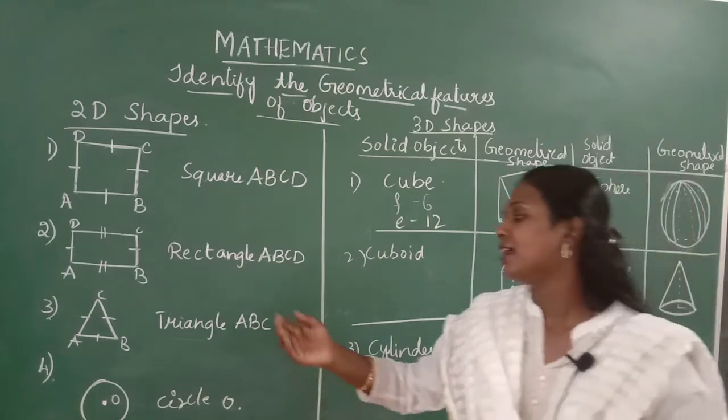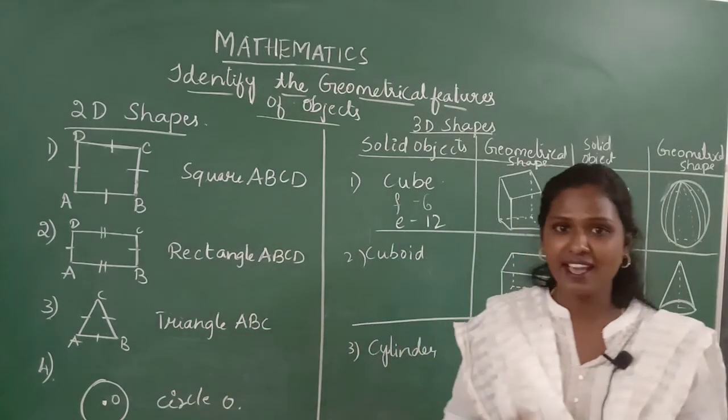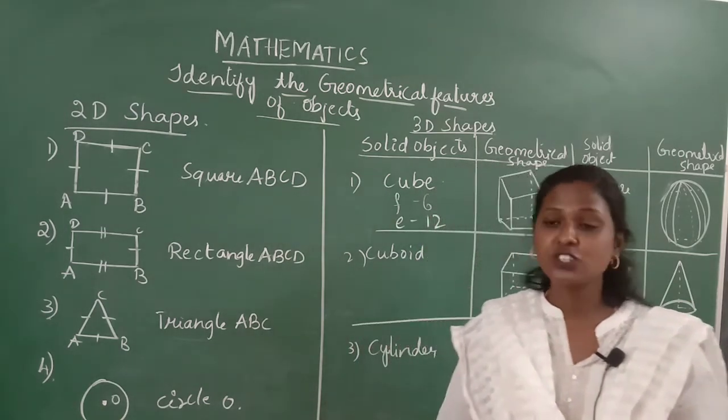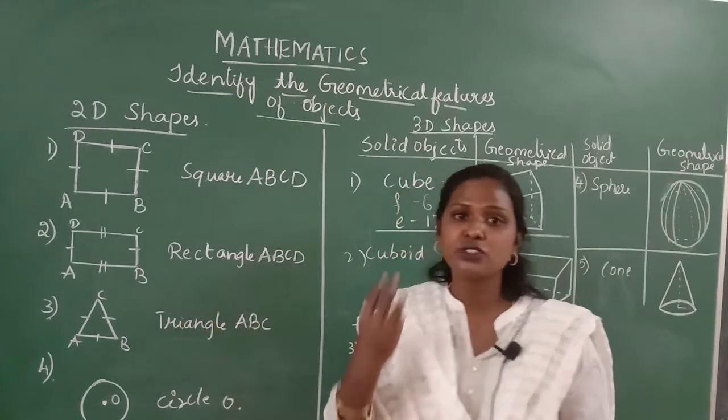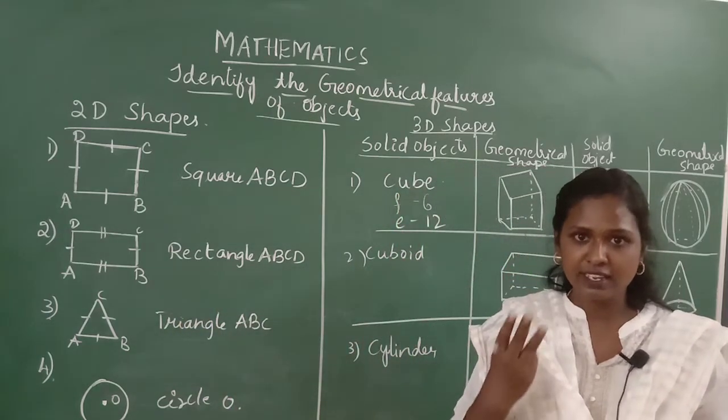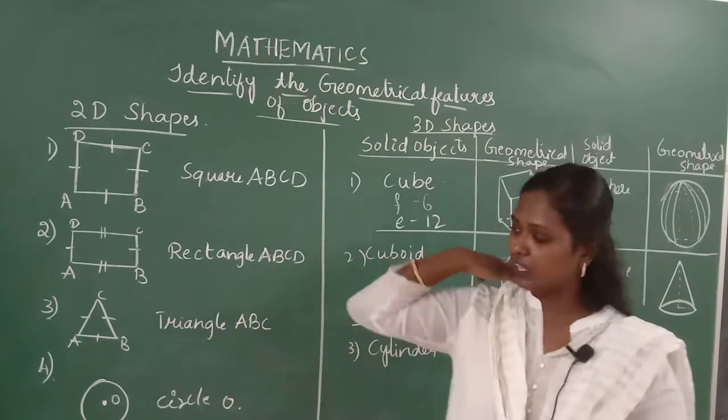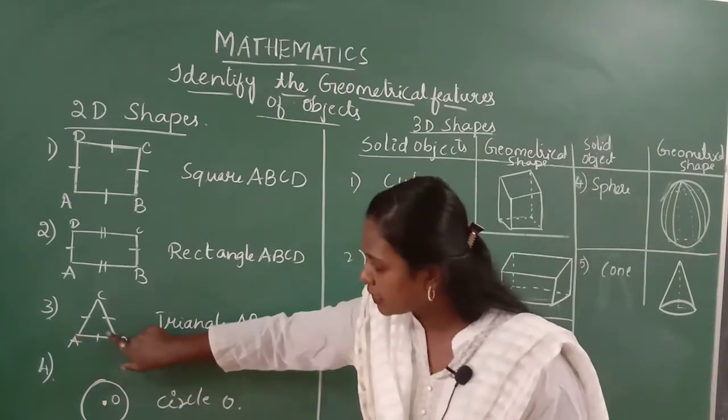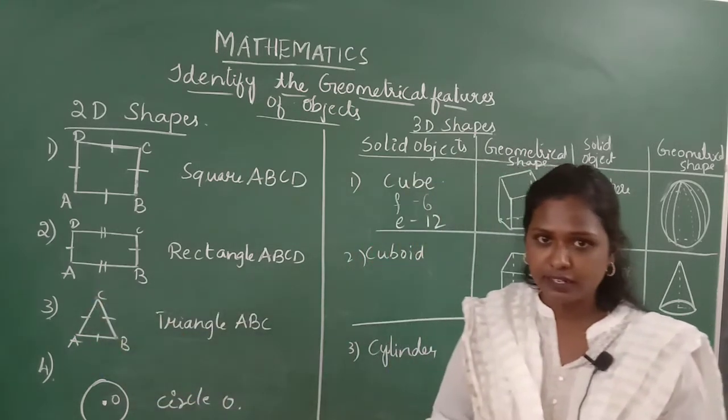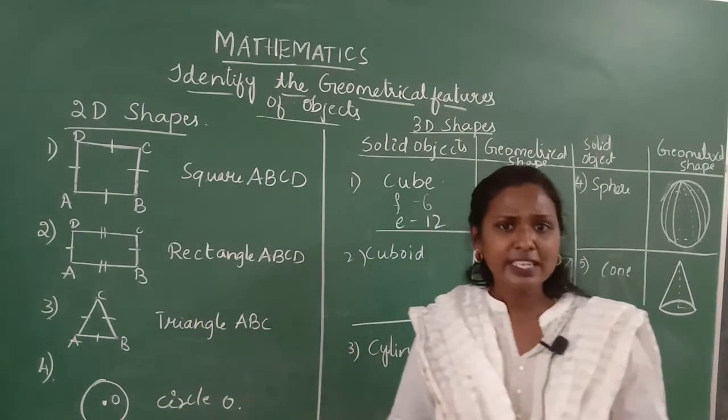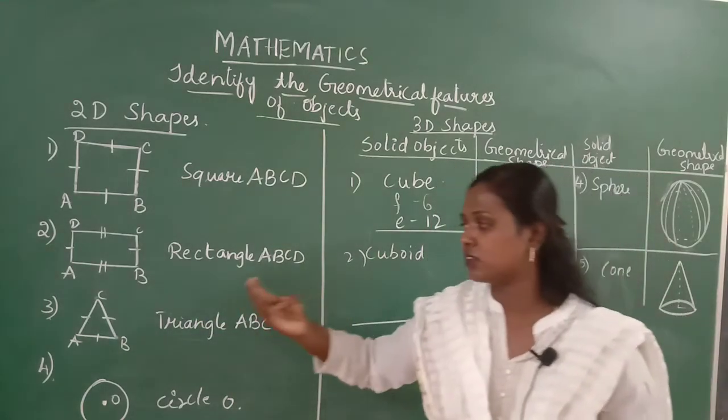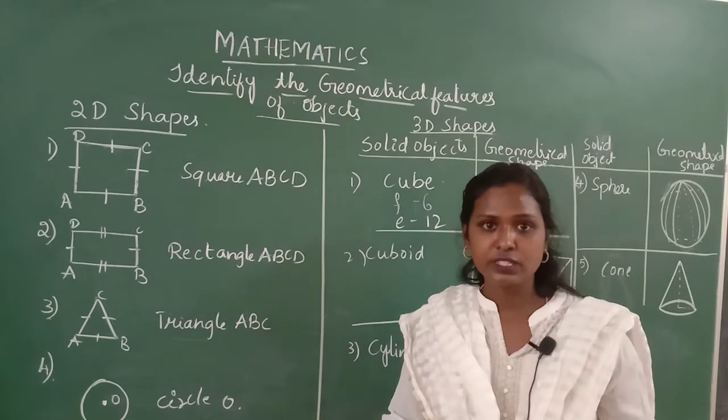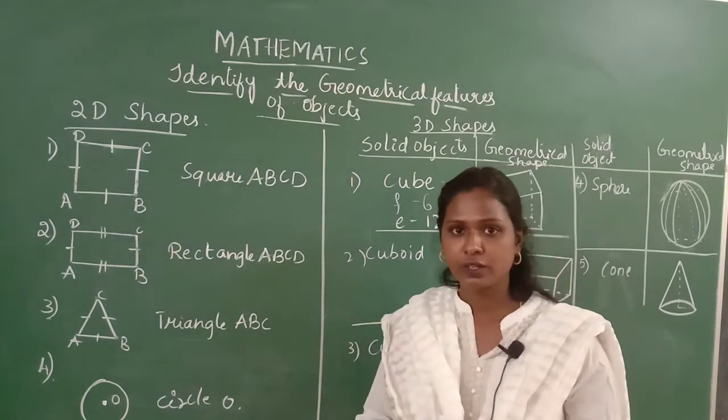Let us move to another example, triangle. Triangle, what does it mean? You might be thinking, right? Tri means 3. The number 3 indicates triangle. You can see this triangle has 3 corners. A, B, C are the corners of the given triangle. It has 3 corners and 3 sides. It does not always have equal sides. It may differ according to the sums.